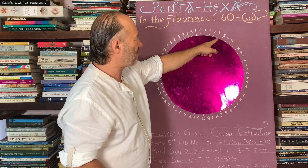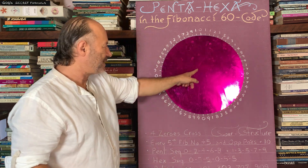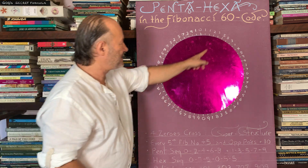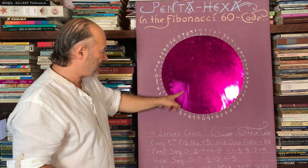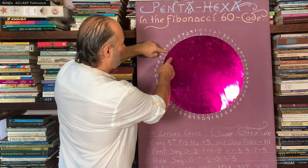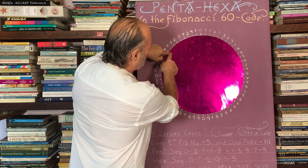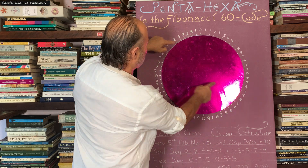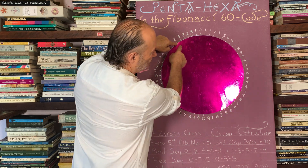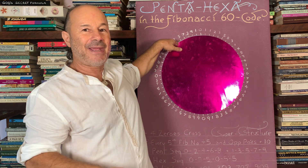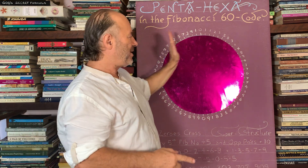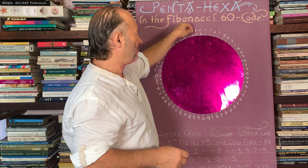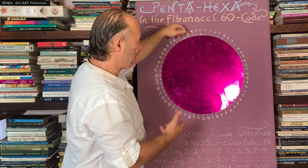And the other bit of number theory is that if I take any number like 3 and go through the center, the opposite number is 7. So 3 and 7 add up to 10. Here I have a 4 — the opposite pair is a 6, and 4 and 6 is 10. Here 2 and 8 is 10. So every opposite pair — all 30 pairs — add up to 10. There's a lot of beautiful symmetry in here.